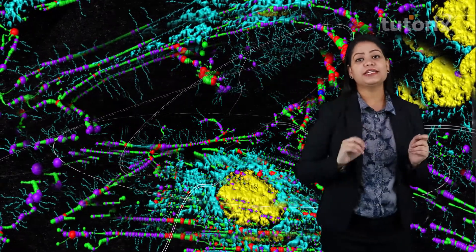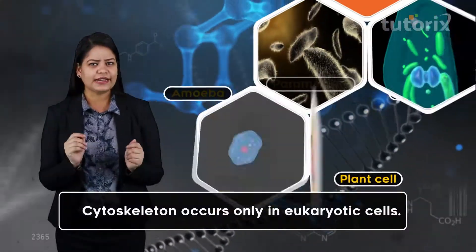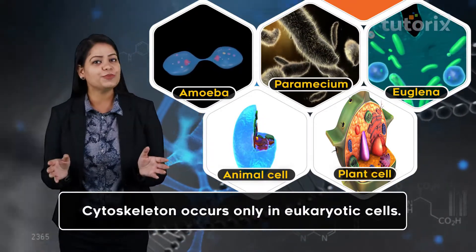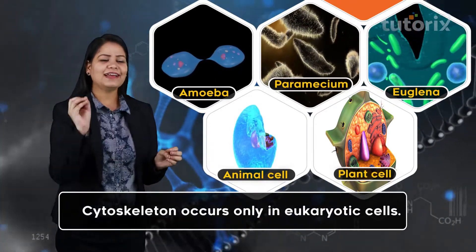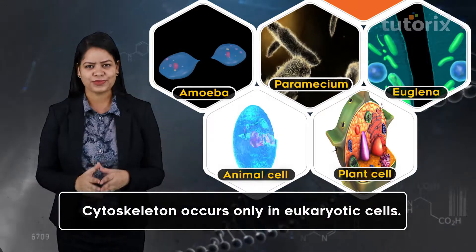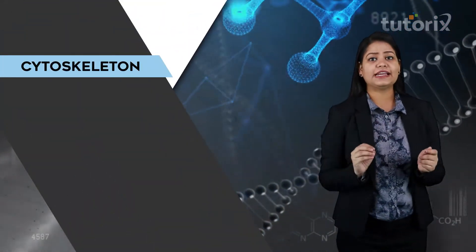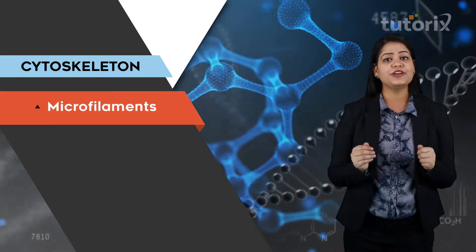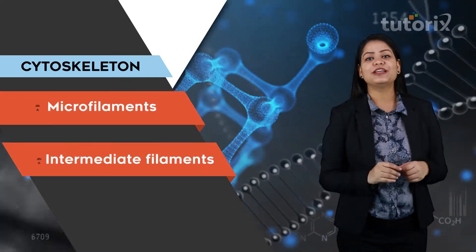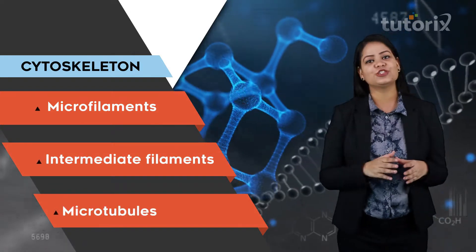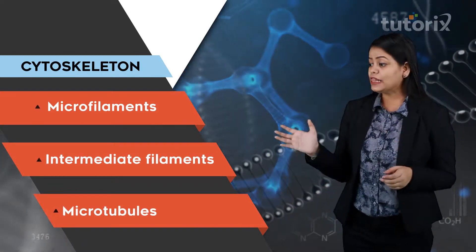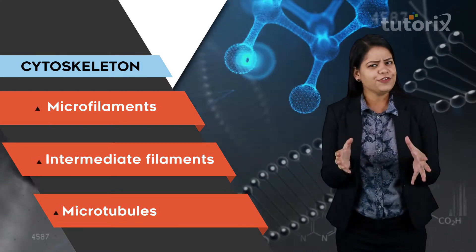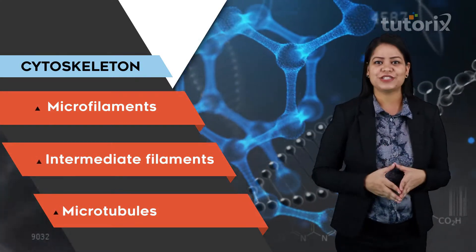The cytoskeleton is found only in eukaryotic cells — all prokaryotic cells lack the cytoskeleton. The cytoskeleton is composed of three components: namely the microfilaments, the intermediate filaments, and the microtubules. All three components making up the cytoskeleton differ in their individual structures and properties.